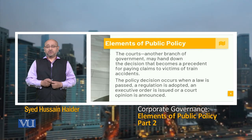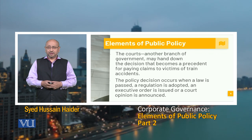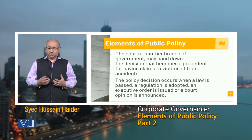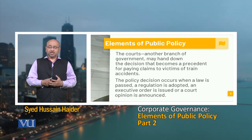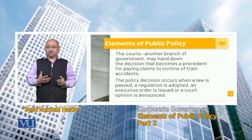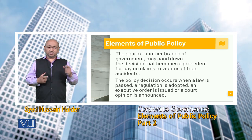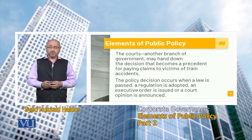Another branch of government may hand down a decision that becomes a precedent — for example, for paying claims to victims of train accidents. The policy decision occurs when a law is passed, a regulation is adopted, an executive order is issued, or a court opinion is announced. A court ruling can set a precedent, as in the case of claims to victims of train accidents.